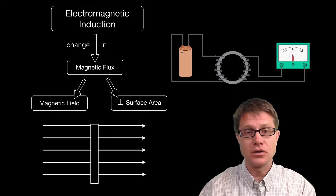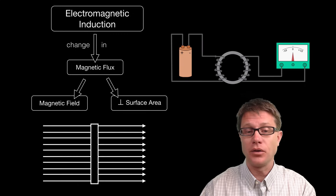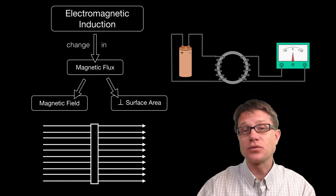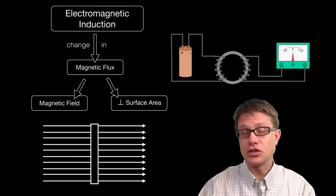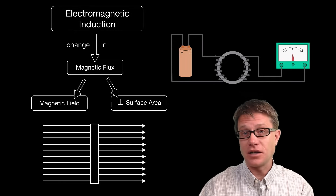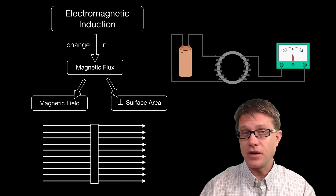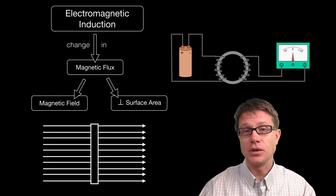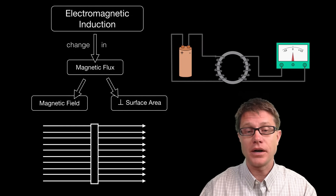What would happen if we were to increase the magnetic field? So let's double the magnetic field. Well, for a moment as we are doubling the magnetic field, are we getting a change in the magnetic flux? Yes. Are we getting induction? Yes. And therefore we are going to have current in that wire. So by varying the amount of that magnetic field we can get induction, or we can get current in that wire.